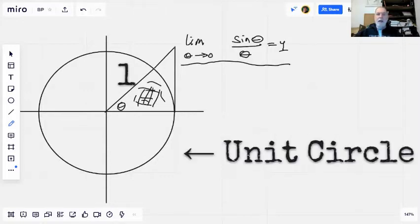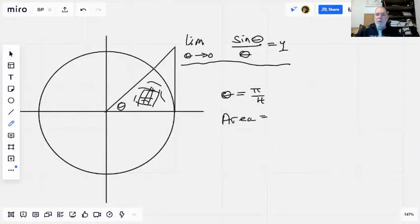For example, if theta is pi over four, then the area is going to be half of that, which is pi over eight. The reason I'm bringing that up is because we want to begin this by comparing areas.